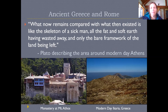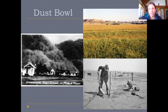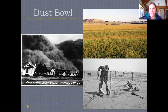Plato's quote says: 'What now remains compared with what then existed is like a skeleton of a sick man, all the fat and soft earth having wasted away and only the bare framework of the land being left.' More recently, the Dust Bowl was created when humans plowed up short-grass prairie and found there wasn't enough rainwater to grow the wheat crops they were attempting, leading to massive wind-blown erosion during a limited drought, combined with the Great Depression causing significant human suffering.